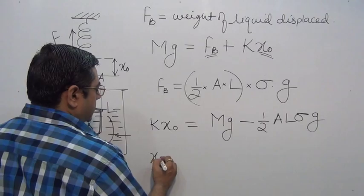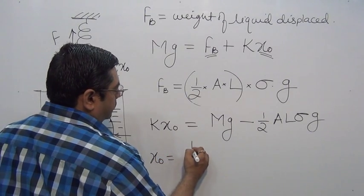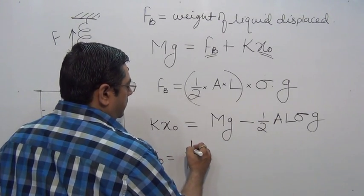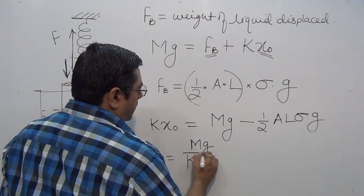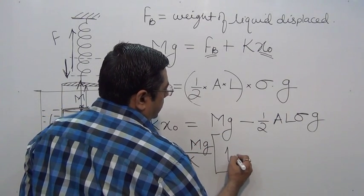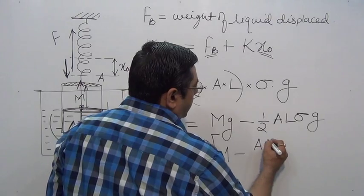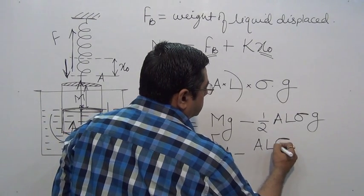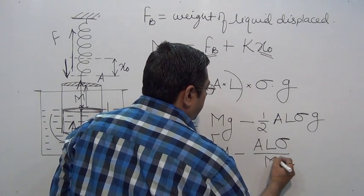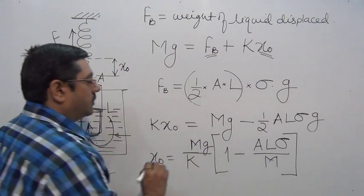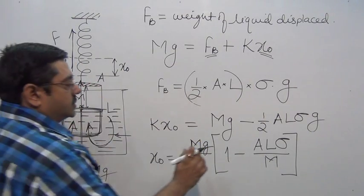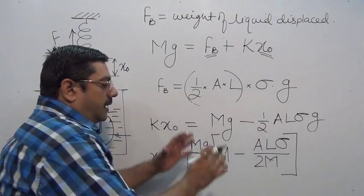Then what is X naught? It is 1 upon K. You may take Mg common because in the option it is taken out: 1 minus A L sigma divided by 2M. This is your answer. In case 2 is here.